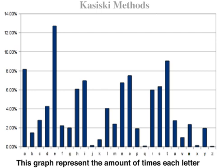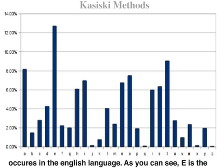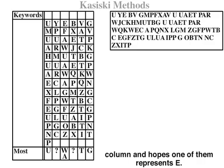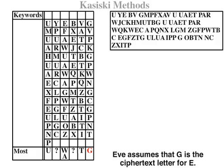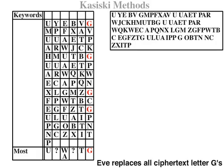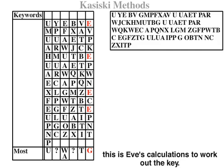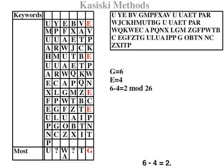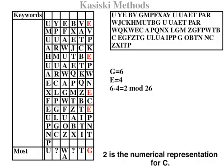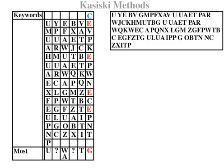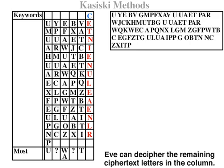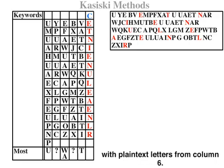This graph represents the frequency of each letter in the English language. As you can see, E is the most common letter. Eve looks at the most frequently occurring characters in each column and hopes one of them represents E. Eve assumes that G is the ciphertext letter for E, and replaces all ciphertext G's in that column with plaintext E. To calculate the key: G equals 6, E equals 4, 6 minus 4 equals 2. The number 2 is the numerical representation for C, so C is the key letter for this column. Eve deciphers the remaining ciphertext letters in the column and updates the original message.